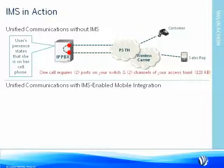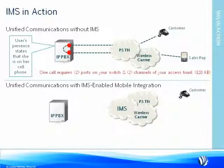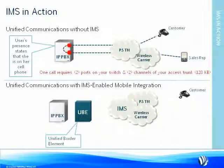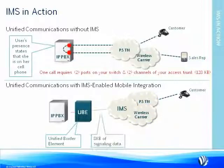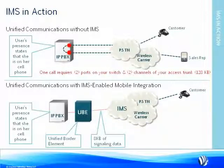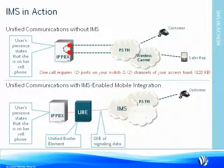Adding all of your company's mobile calls would likely require a big upgrade in capacity. Now let's see how IMS plays a part. We add a unified border element that communicates SIP signaling to the wireless carrier's IMS network. The same call routes to the PSTN, and since the wireless carrier is also the MPLS provider, it receives the handoff from the public switch telephone network. The wireless carrier recognizes the phone number as a mobile integration customer and simply sends 8 kilobytes of signaling data to the corporate voice over IP server. The user's presence states that the sales rep is on her cell phone, and the wireless carrier routes the call directly to the sales rep without any real impact to the corporate network.